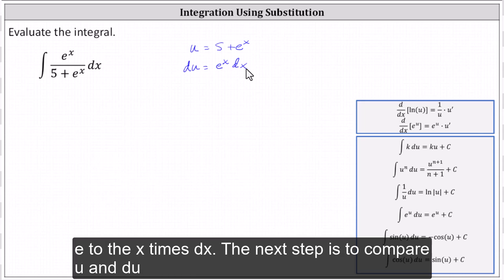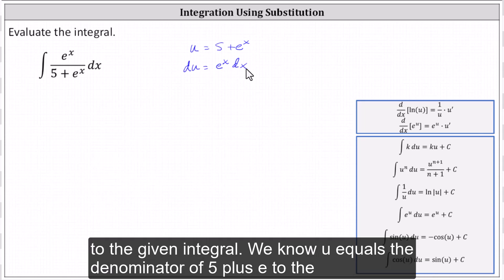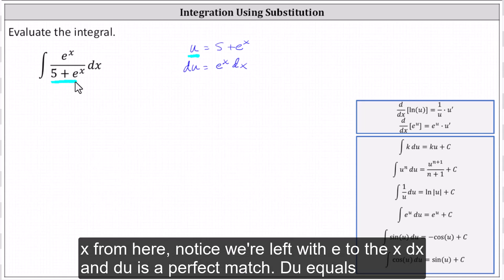The next step is to compare u and du to the given integral. We know u equals the denominator of 5 plus e to the x. From here, notice we're left with e to the x dx, and du is a perfect match.